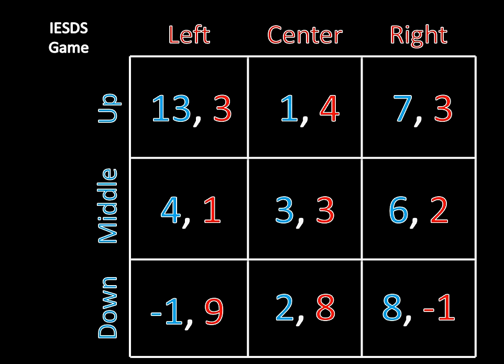Each player has three strategies. Player 1 has up, middle, down. Player 2 has left, center, right, and that leads to nine different outcomes. Now, I want you to notice something about Player 1's strategies. If Player 2 were to go left, then Player 1's best strategy is to play up because 13 is greater than 4 or negative 1. But if Player 2 were to play center, then Player 1 should want to play middle because 3 is greater than 1 or 2. And if Player 2 were to play right, then Player 1 would want to play down because 8 is better than 7 or 6. So based on what Player 2 is doing, Player 1 has a different best response — Player 1 is always wanting to change his strategy based on what Player 2 is going to do.